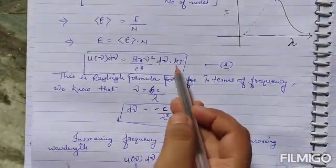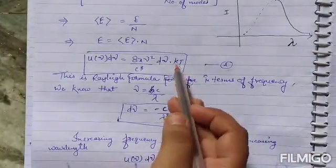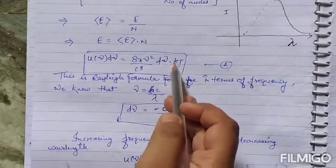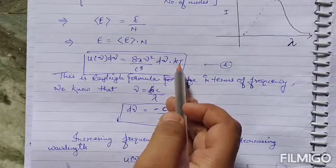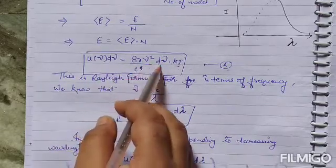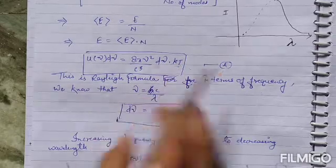But here the average energy is kT. So u(ν)dν equals 8πν²/c³ dν times kT. This is our equation A. This is the Rayleigh formula in terms of frequency.